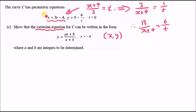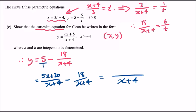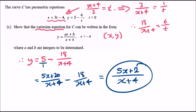Substituting into the y equation: y equals 5 minus 18 over (x plus 4). Getting a common denominator, rewrite 5 as 5(x plus 4) over (x plus 4), giving 5x plus 20 over (x plus 4) minus 18 over (x plus 4). Combining: y equals (5x plus 2) over (x plus 4). Done.